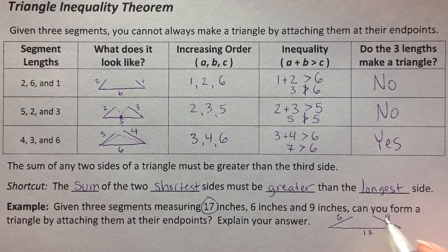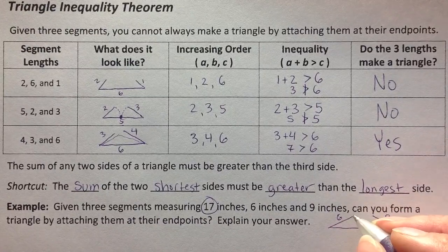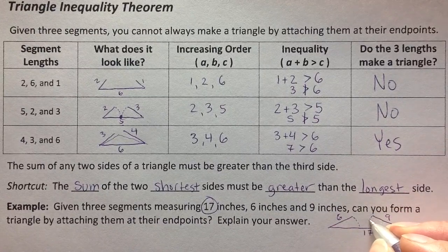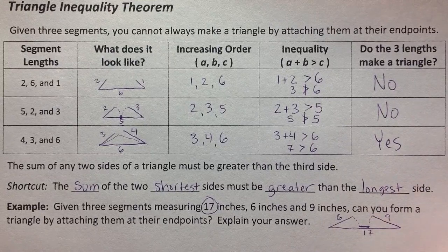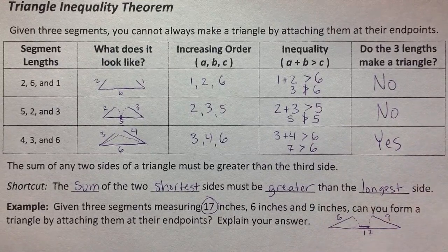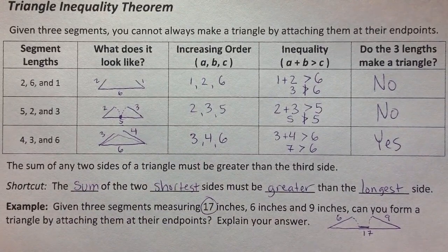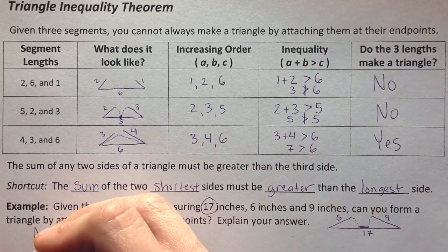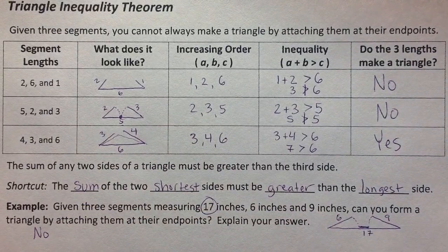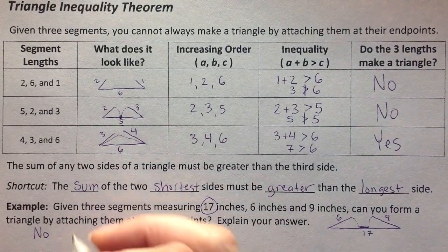So 6 plus 9 is 15. I'm not going to be able to make a triangle here. They'll get close, but even when you lay these flat, if you lay down 6 and you lay down 9, you're still going to have 2 inches here that they're not going to be able to touch. So my answer is no, and when I'm explaining my answer, basically, I really just have to give the definition or the theorem.